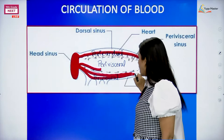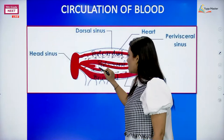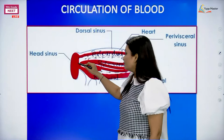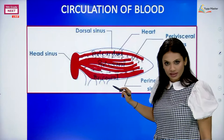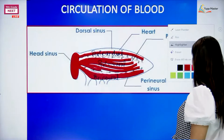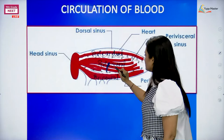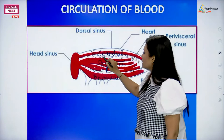Both the perivisceral and perineural sinuses are filled with blood, and hence all the parts in these sinuses will receive that blood. This is blood coming directly from the heart containing all the nutrients, so all the different organs in these chambers will be receiving those nutrients. Then in the perivisceral sinus, more absorption takes place from the digestive system. Those absorbed substances will come back into the blood, and the blood will contain all those nutrients and go upwards back into the pericardial sinus.